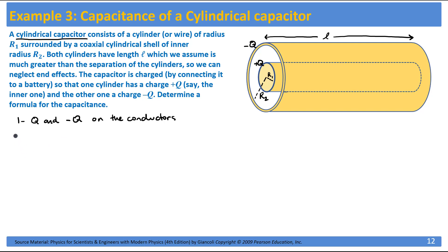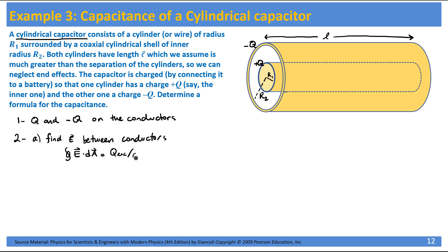The next step is to calculate the potential difference, but this has two parts: first we need the electric field. So we find the electric field between the conductors using Gauss's law — flux equals q_enclosed over ε₀ — then we find the potential difference V, which equals the negative integral of E·dl from the negative conductor to the positive conductor. Once we have V, the capacitance is simply C = q/V.